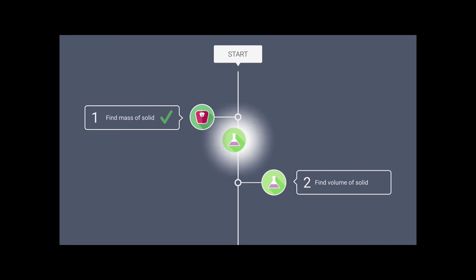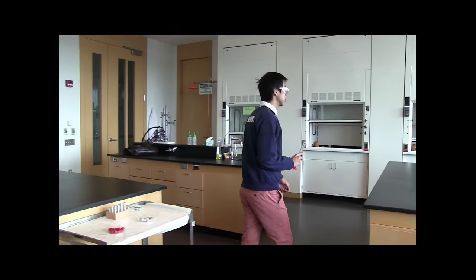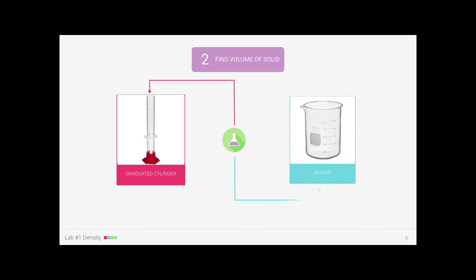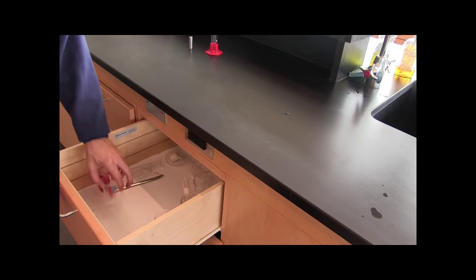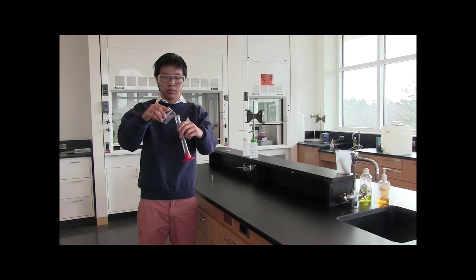Step two, find the volume. To find the volume, we're going to use a graduated cylinder. Grab one of the larger cylinders from the cart and head over to the bench. We'll also need to use a beaker, which you can find in one of the drawers. Fill your beaker up with tap water, and then pour the water from the beaker into the cylinder, filling the cylinder about halfway.